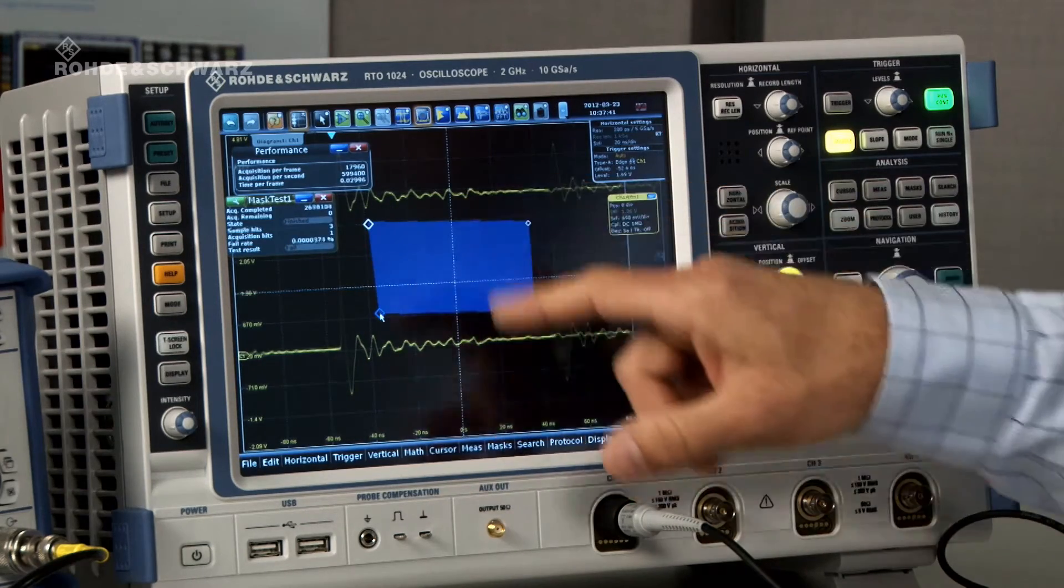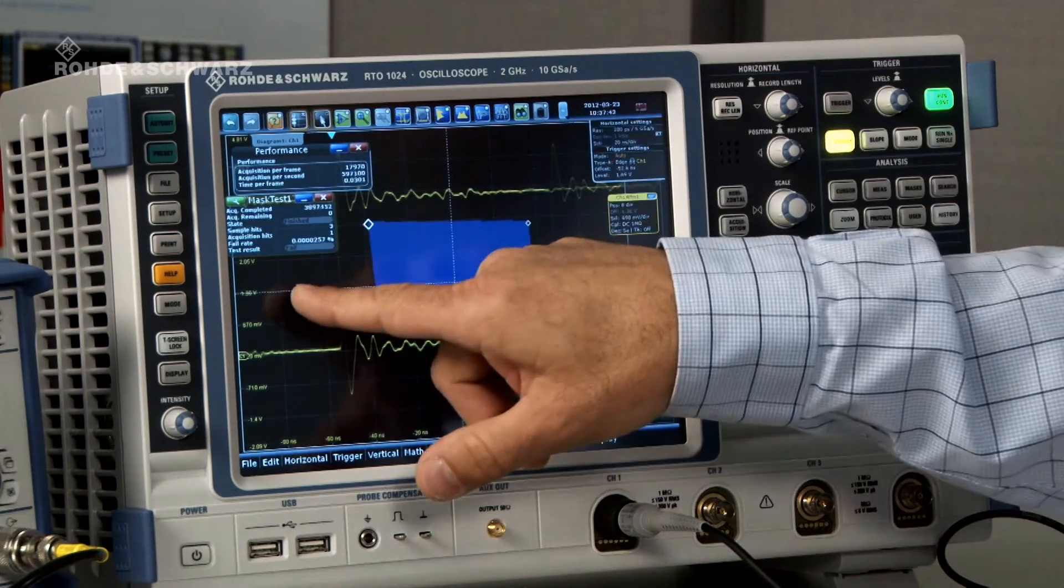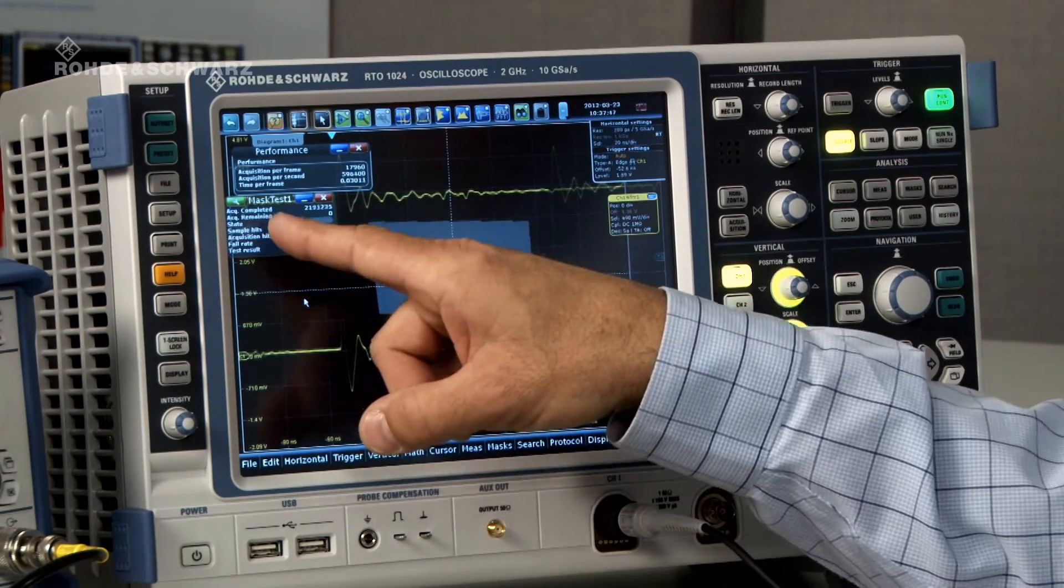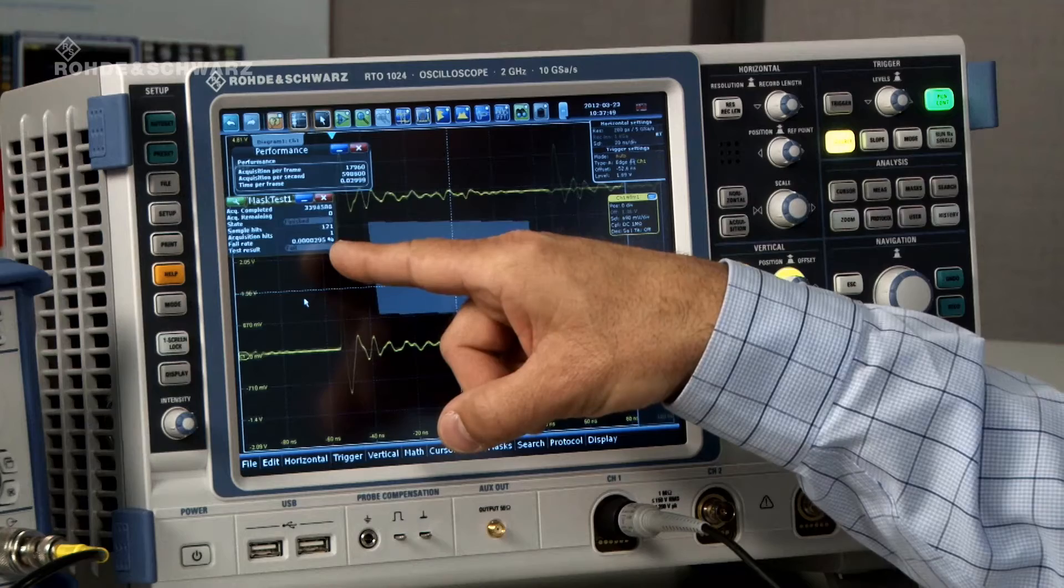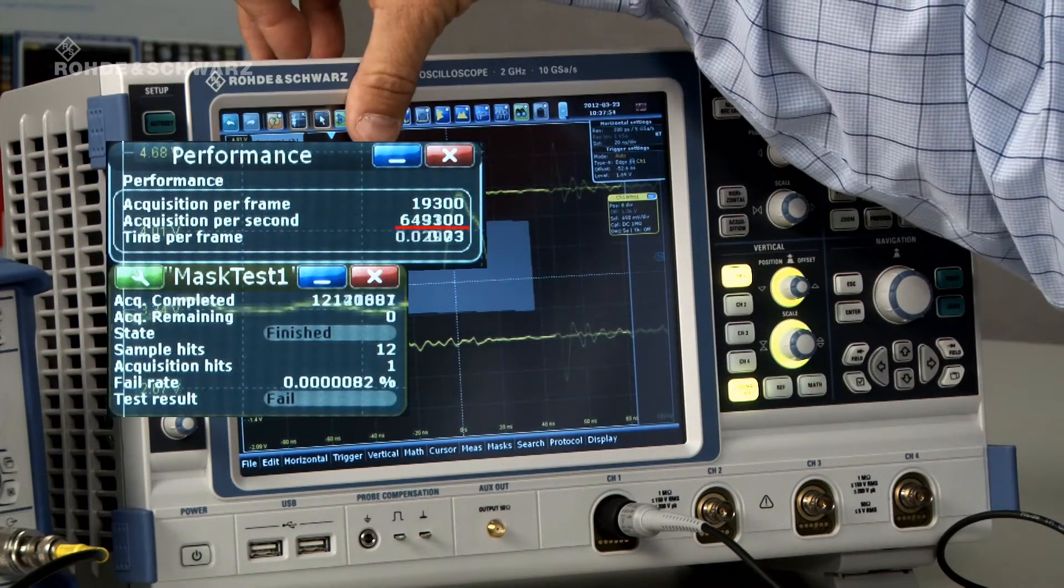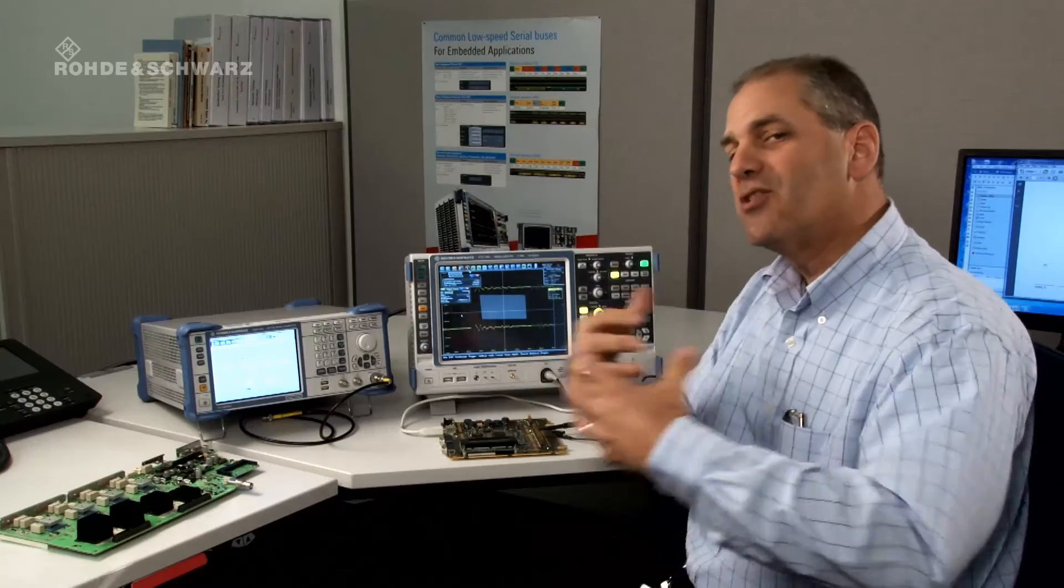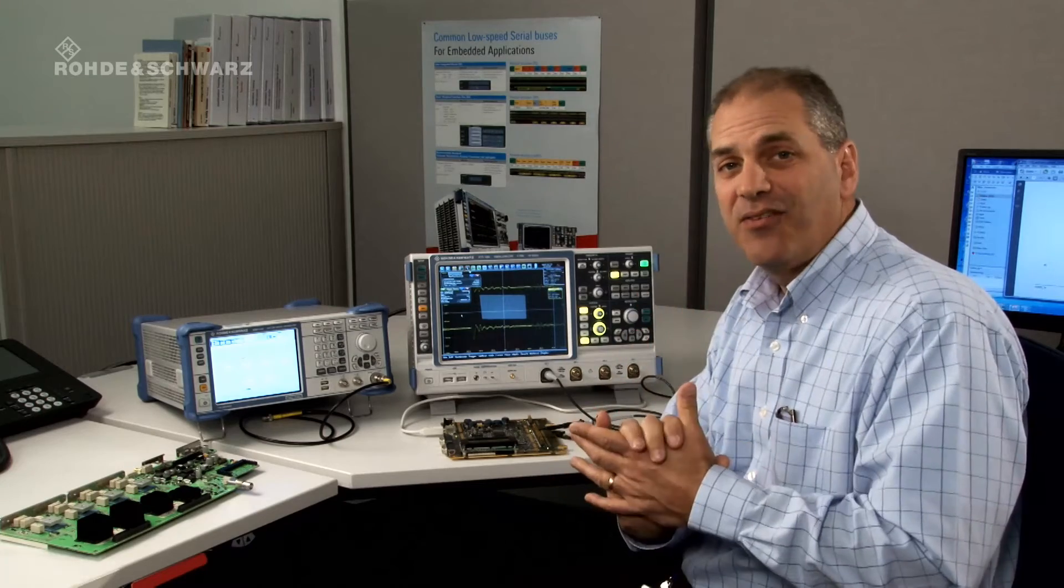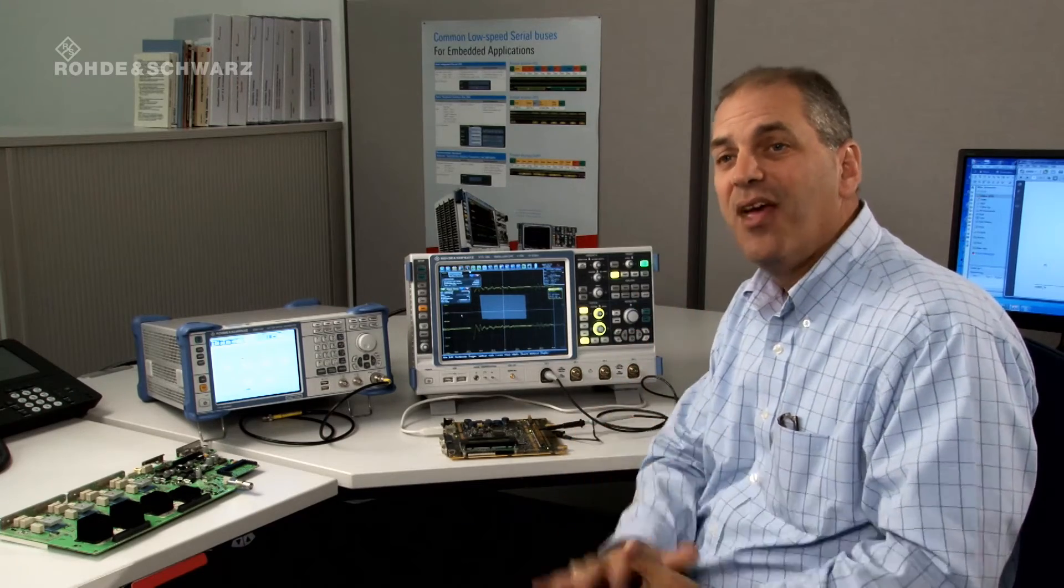And what I'm going to do is activate that mask and now we're running a mask test. We're acquiring waveforms, we're testing for errors and we're capturing the failure rate. Notice the update rate is still 600,000 waveforms per second. So now I'm not just acquiring a waveform, I'm acquiring a waveform, I'm testing it against a compliance mask, putting up the statistics and doing all of this still at 600,000 waveforms per second.